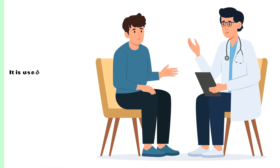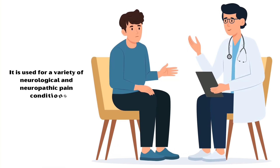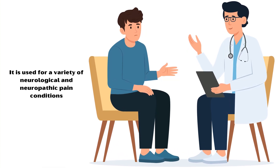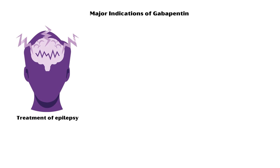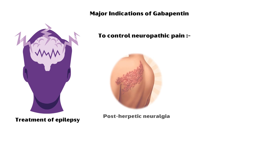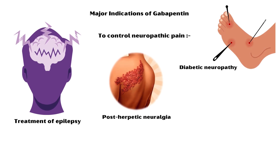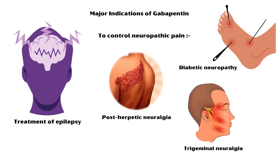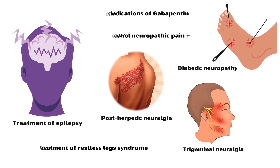It is used for a variety of neurological and neuropathic pain conditions. Major indications of gabapentin include the treatment of epilepsy, control of neuropathic pain — especially in conditions such as postherpetic neuralgia, diabetic neuropathy, and trigeminal neuralgia — and the treatment of restless leg syndrome.